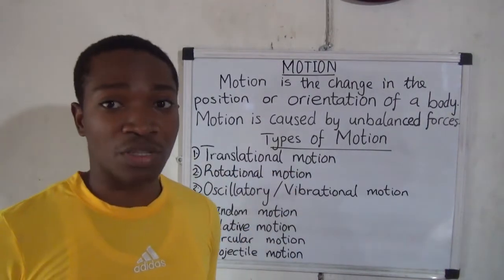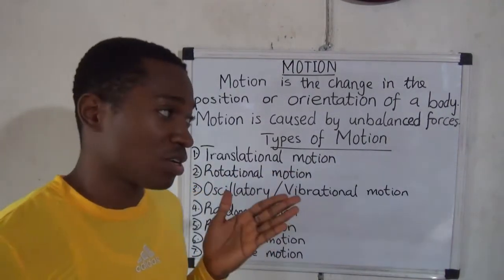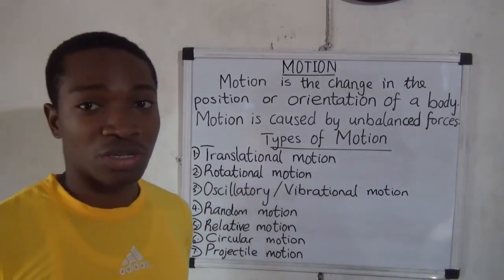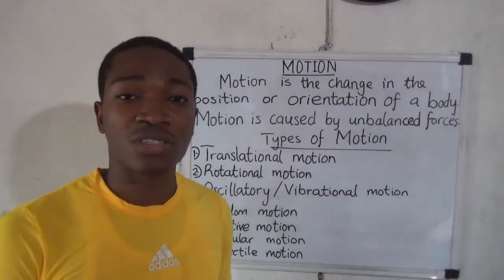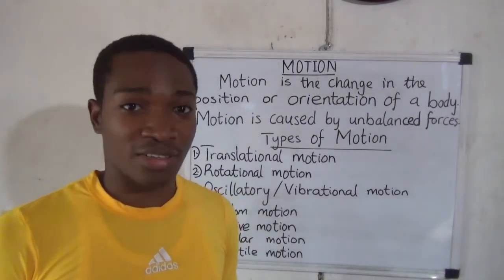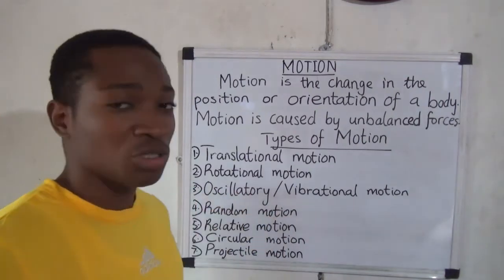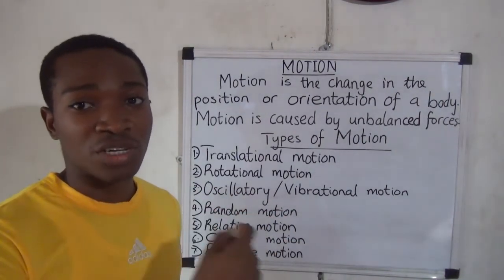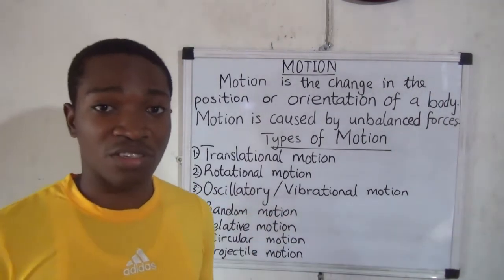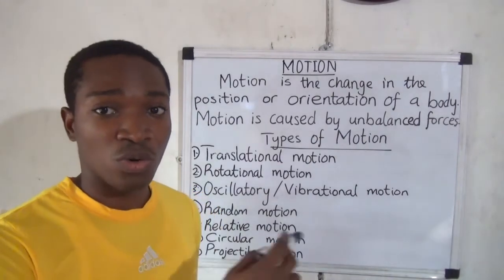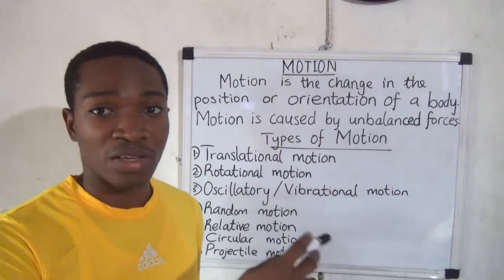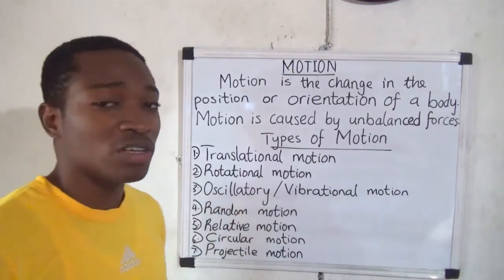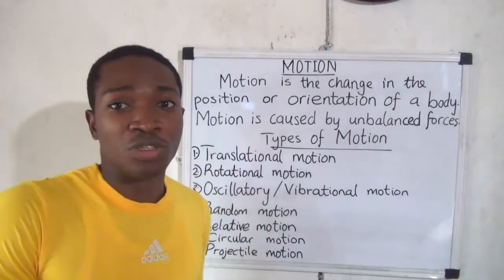Translational motion is the movement of an object along a straight path. Rotational motion is the movement of an object about its axis. Oscillatory motion is the to-and-fro movement of an object. The repetitive to-and-fro movement of an object is known as oscillatory motion, also called vibrational motion.